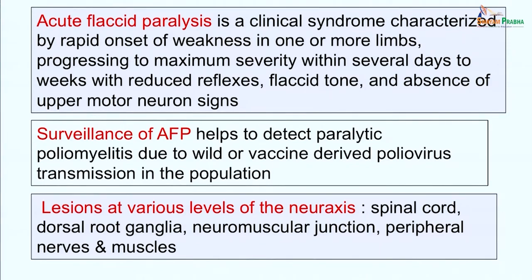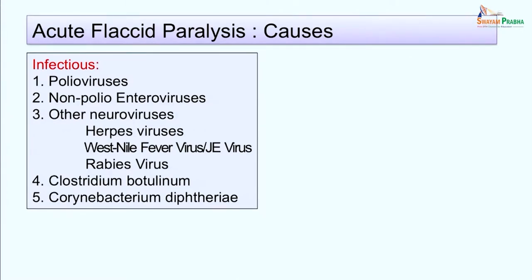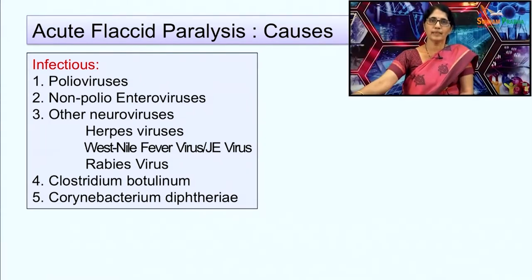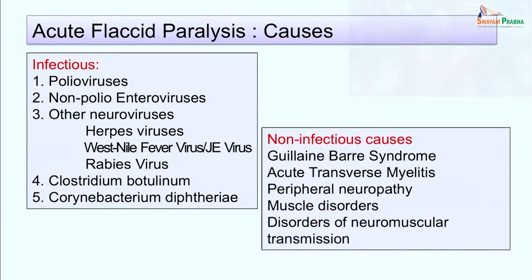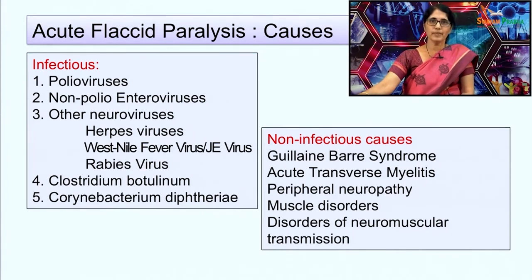There may be involvement of peripheral nerves like Guillain-Barré syndrome, poliomyositis, and viral myositis. Lesions at various levels of the neuroaxis may cause acute flaccid paralysis. The most important infectious causes include polioviruses, non-polio enteroviruses, other neuro viruses like herpes viruses, West Nile virus, Japanese encephalitis virus, rabies virus, and bacterial infections caused by Clostridium botulinum and Corynebacterium diphtheriae. Non-infectious causes include Guillain-Barré syndrome, acute transverse myelitis, peripheral neuropathy, muscle disorders, and disorders of neuromuscular transmission.